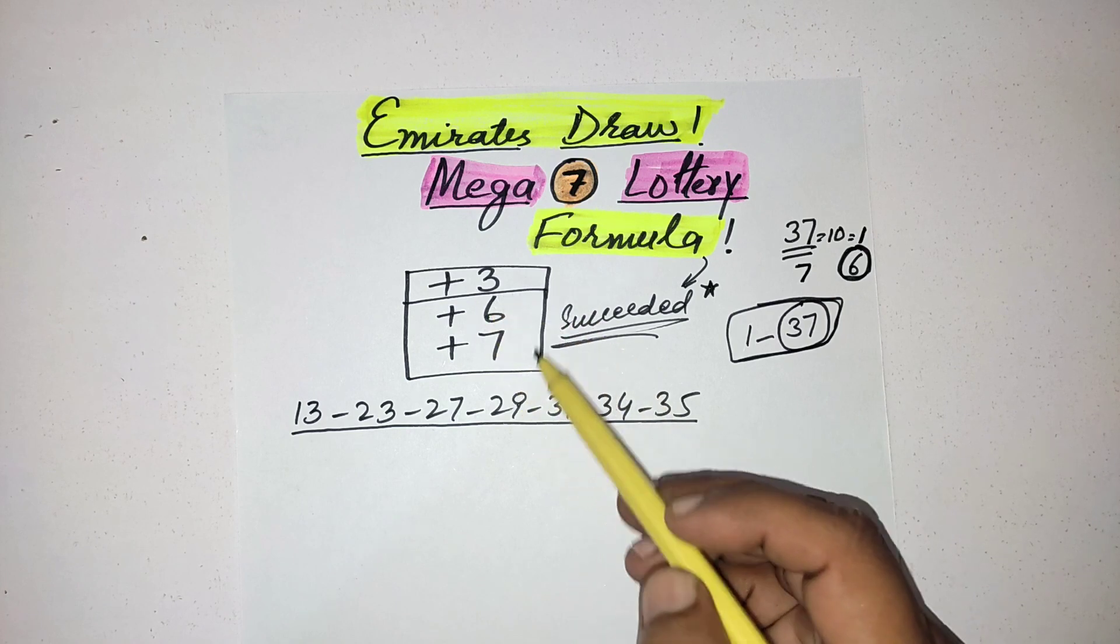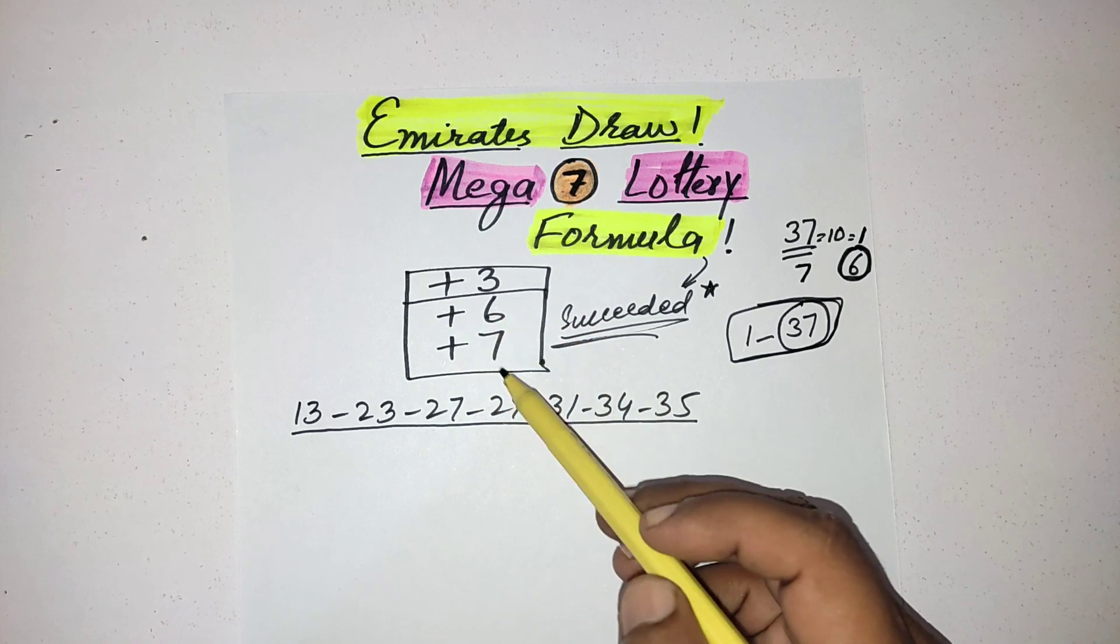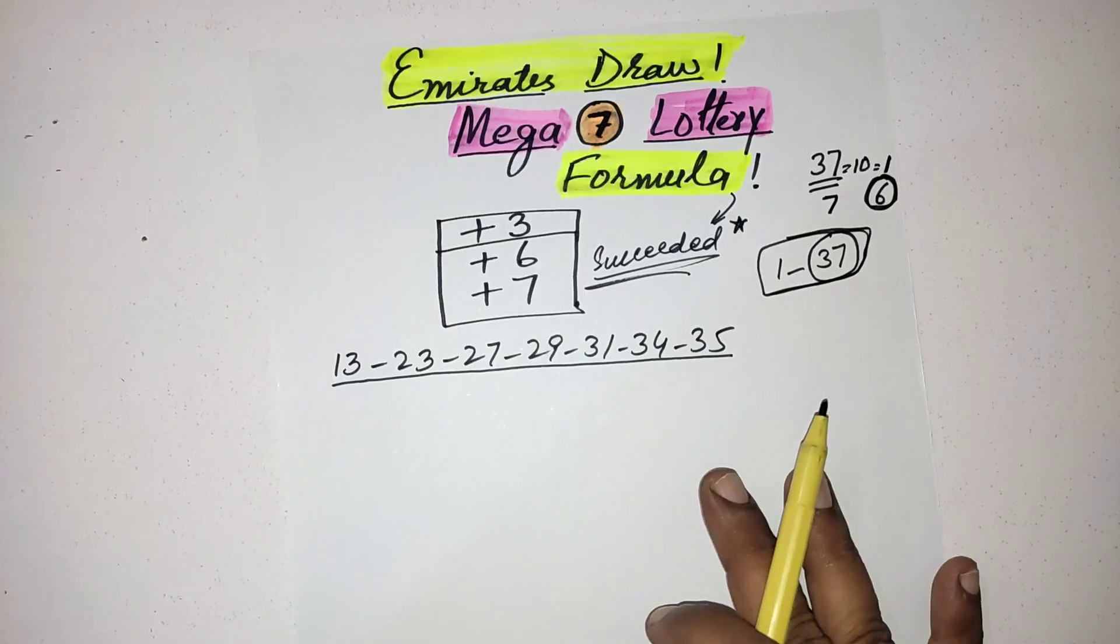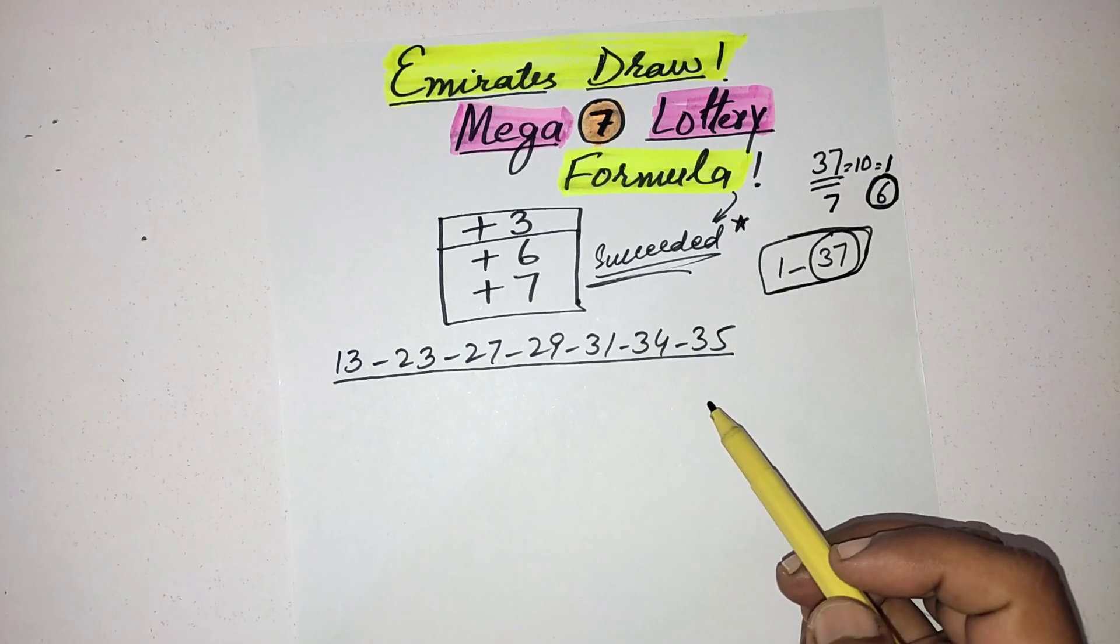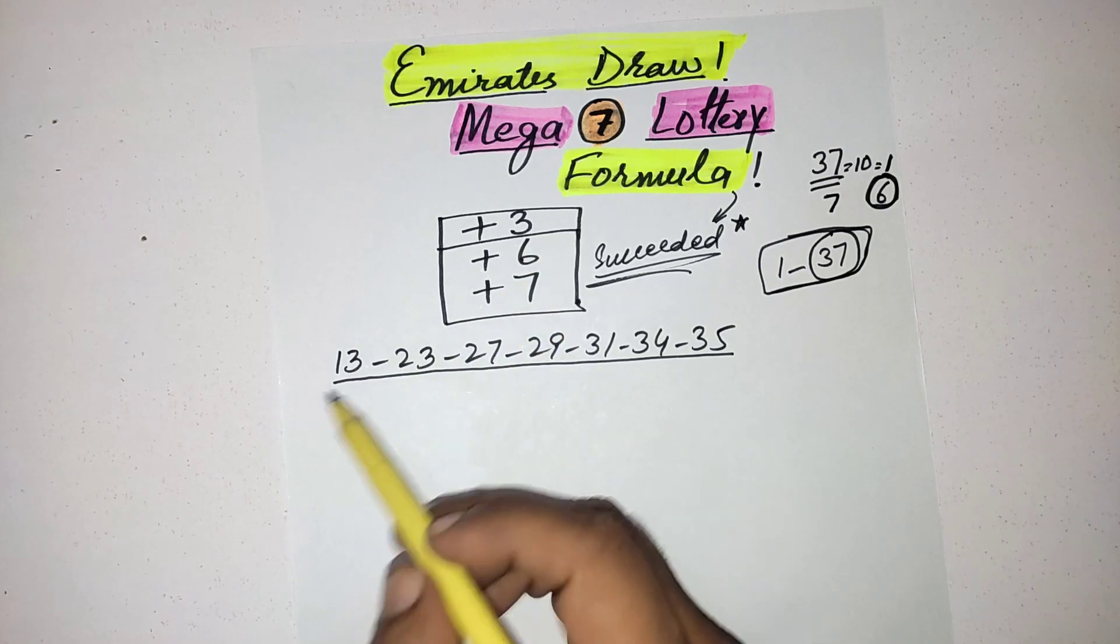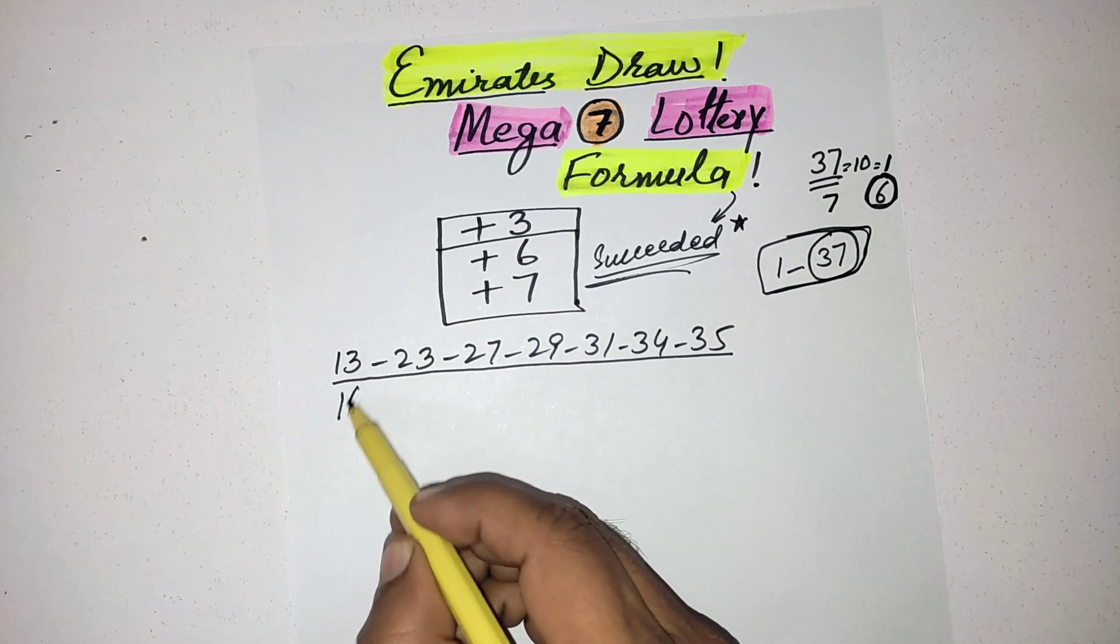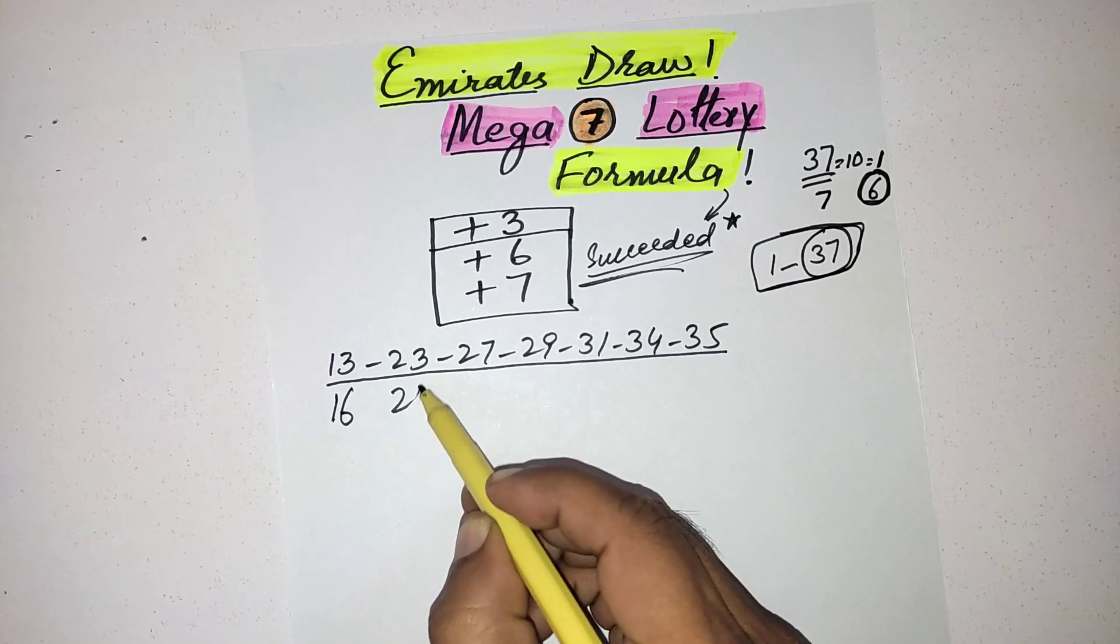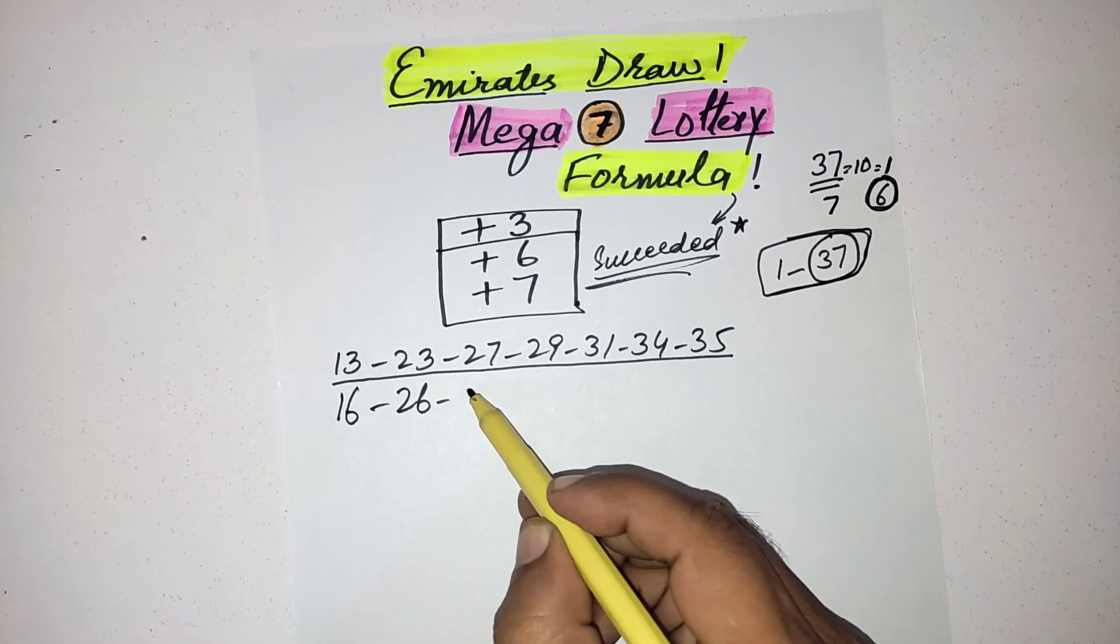Main point is how you use these codes and get the best numbers for the next draw. This is the previous result. First you will add the 3 number in every number. 13 plus 3 is 16, 23 plus 3 is 26, 30 plus 3 is 32, then 34, 37, and 1.